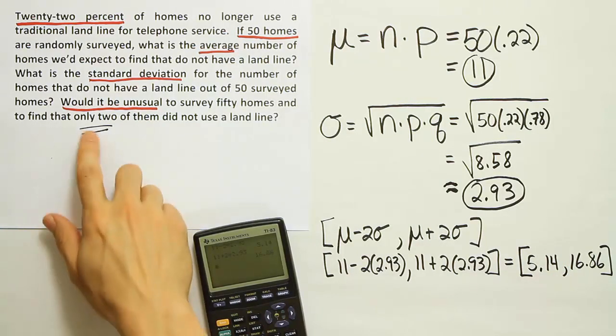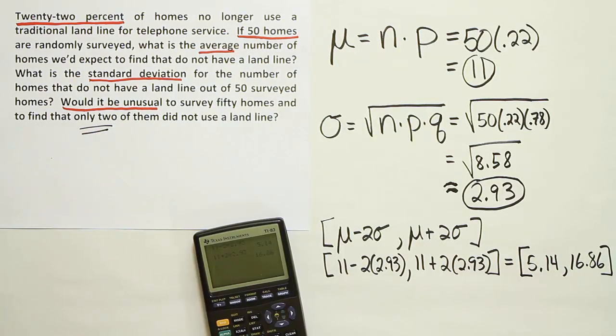Would it be unusual to find only two of them that did not have a landline? Yeah, because two is outside of the interval. Two is outside. We might get anywhere from, say, six because five actually is not in the interval, somewhere between six and say 16. Six and 16 homes, that's kind of typical.